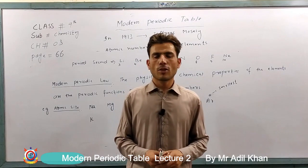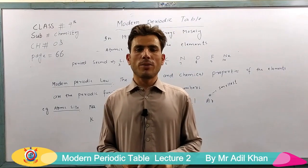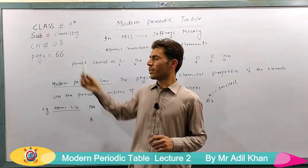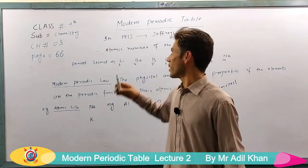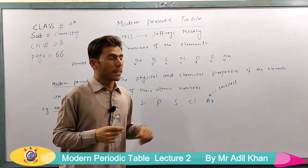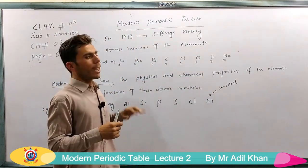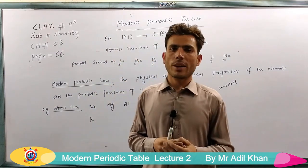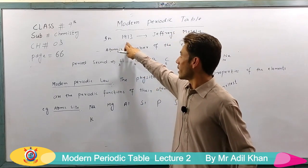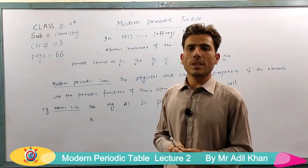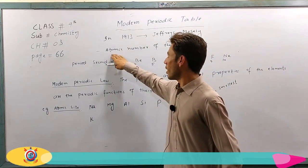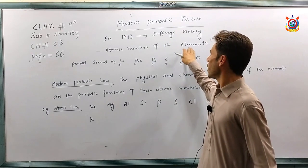Bismillahirrahmanirrahim. The modern periodic table. In 1930, an English physicist whose name was Geoffrey Moseley put forward the modern periodic table, which is based on the atomic number of the elements.